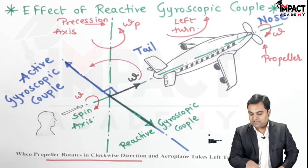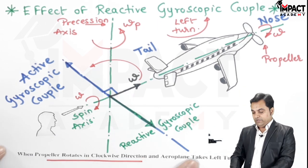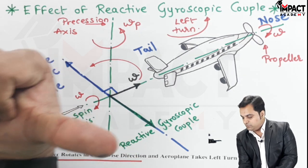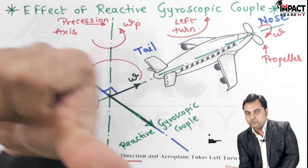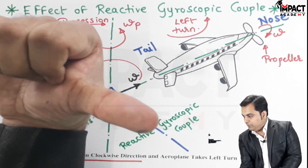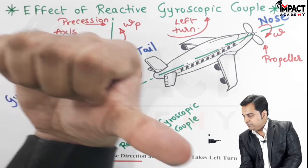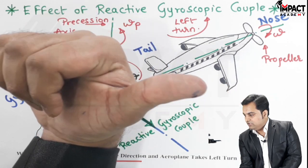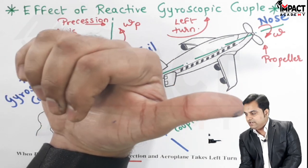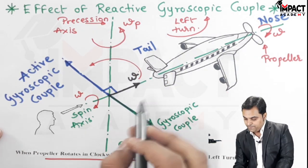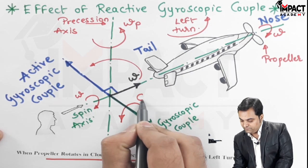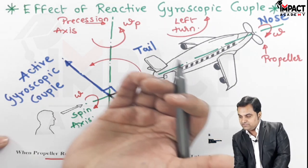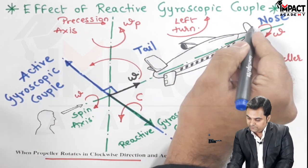Once the vector of the reactive gyroscopic couple is known, point the thumb parallel to this vector and the fingers curl in the corresponding direction. This curling of the fingers shows the direction of the reactive gyroscopic couple C, and this same rotation is transferred onto the plane.